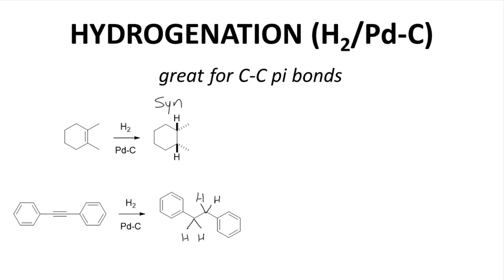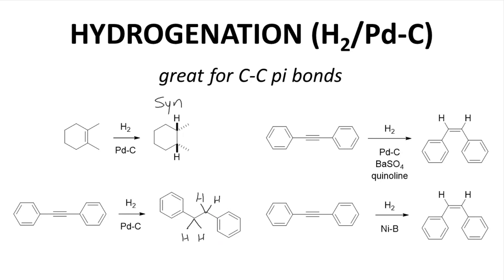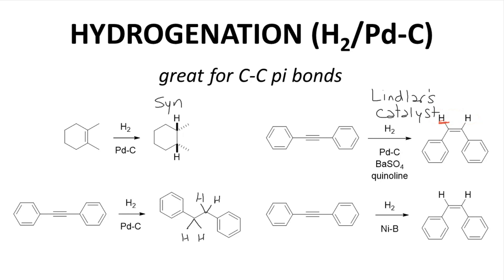These two hydrogenations are the standard reactions. Here are two more. The top reaction is a hydrogenation of an alkyne with hydrogen and palladium on carbon, as well as barium sulfate and quinoline. These last two reagents poison the catalyst and cause the second addition to be slow enough to stop the reaction at the alkene. This reagent system is called Lindlar's catalyst. The addition is still a syn addition, and you can see that in the Z configuration of the alkene product, with both hydrogens on the same side.